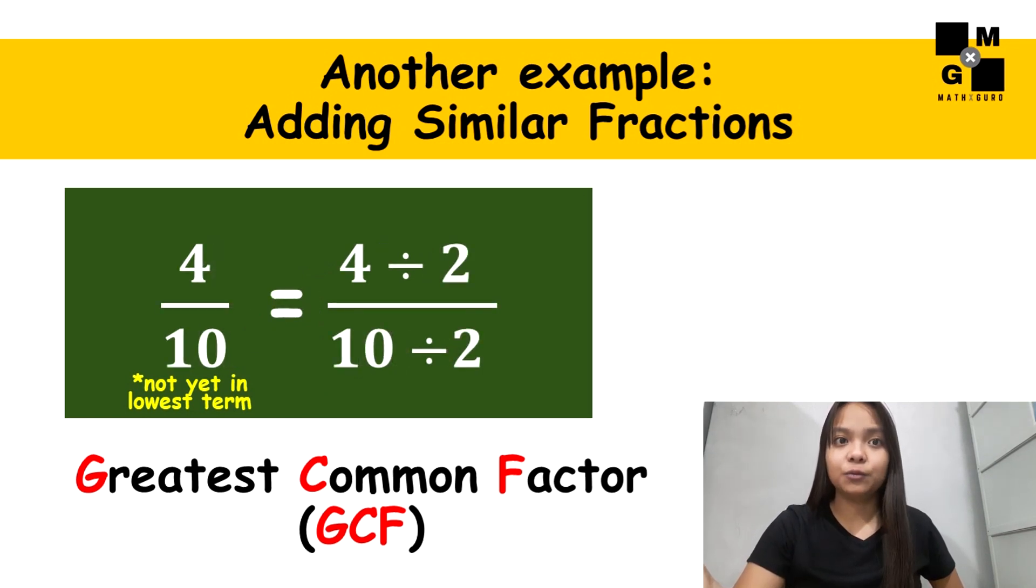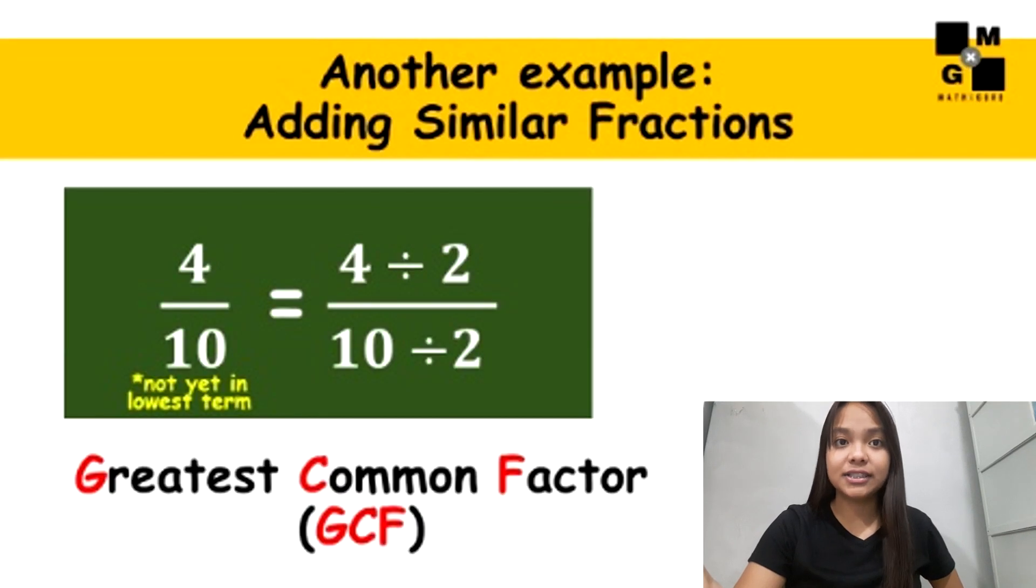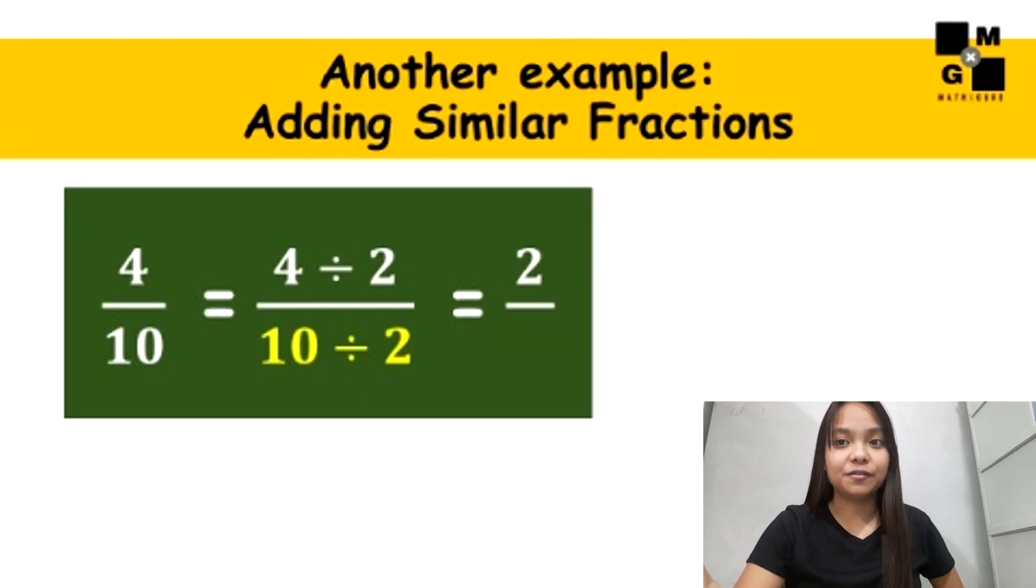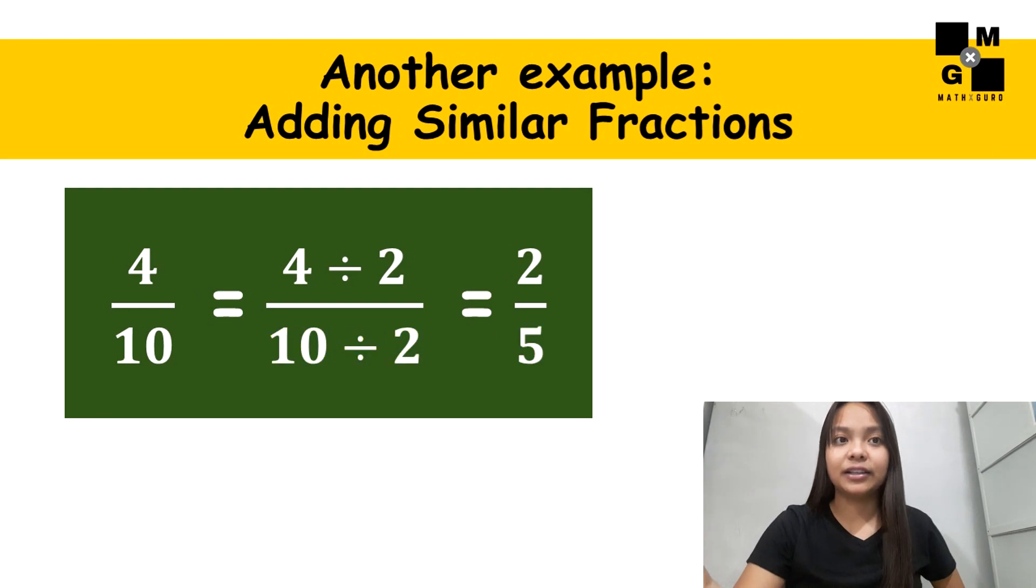If in case you forgot what greatest common factor or GCF means, we will leave a link on the description box below. Make sure to check it out. Four divided by two is two, and ten divided by two is five. Our final answer is two over five. It's easy, right?